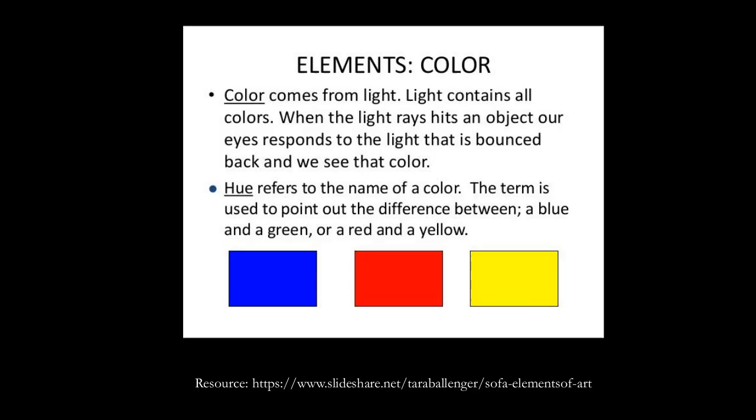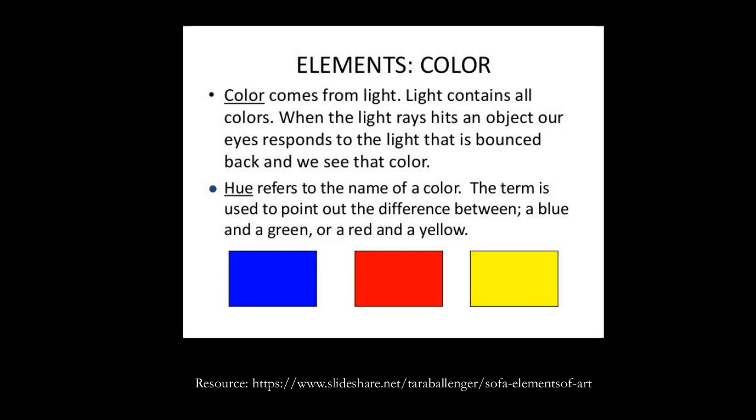Now we're going to switch gears a little bit and talk about color the way 2D artists or painters may want it, just to reiterate some things. Color comes from light, which we talked about earlier. Light contains all colors. When the light ray hits an object, our eyes respond to light as it bounces back, and then we see color. Hue refers to the color name — the term is used to point out differences between blue, green, red, or yellow.